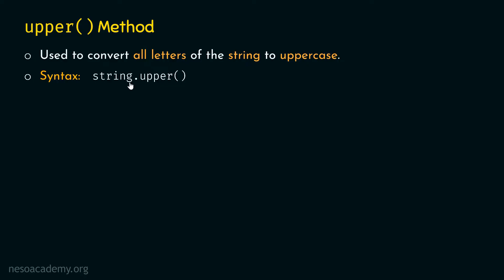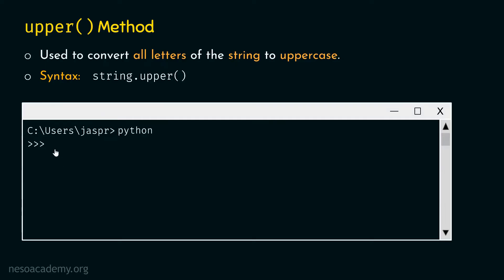The syntax is: first provide the string, then the dot operator, and then the upper method with parentheses. Let's move to the command prompt and see a simple example of how upper method works. We'll type the command: 'Hello, I am just breathe'.upper() — please note that upper method does not accept any arguments, so we must include the parentheses.